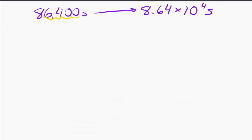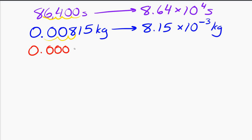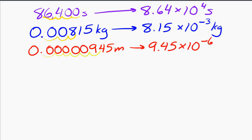Or I could take a very small number, like 0.00815 kilograms, and rewrite that as 8.15 times 10 to the minus 3 kilograms. Or 0.00000945 meters can be written as 9.45 times 10 to the minus 6 meters. You can do this in many different ways — you've probably seen this in a math class or other science classes. That is the idea of scientific notation.